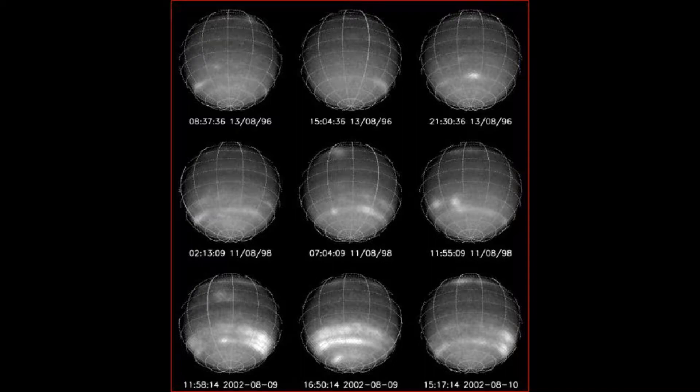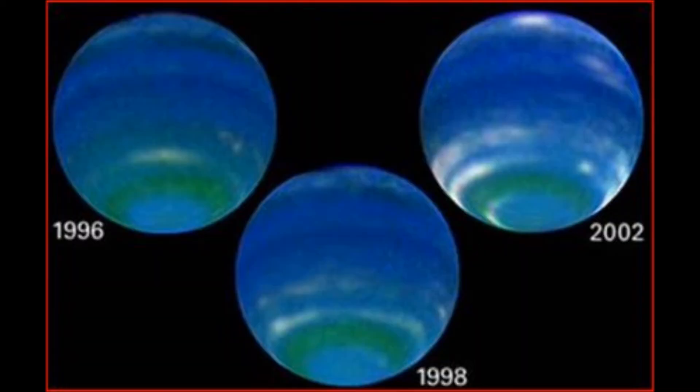Here we have more Hubble HST images of Neptune showing the brightening from 1996 to 2000, and we can see a causal effect through the Earth — global warming on Earth, or climate change, the same on Neptune.